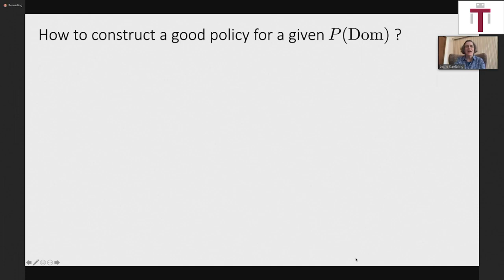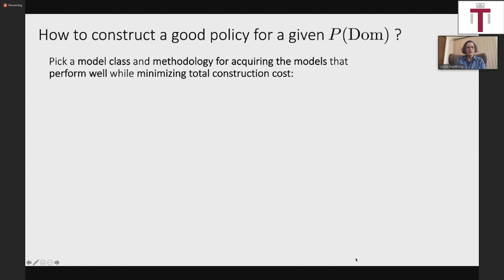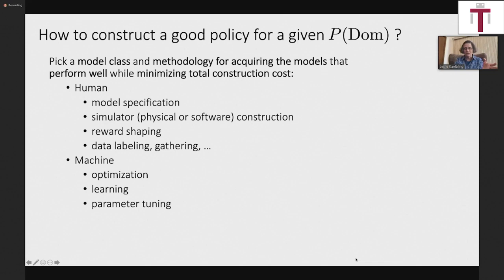Fundamentally, the way we tend to approach these problems is we pick some class of models and some way of acquiring the models, and we have to minimize engineering cost. Engineering cost includes human engineering cost — how hard it is to write the models down, make a simulator, do reward shaping — and work that machines have to do, like optimization, learning, and parameter tuning. We want to pick a model class where humans have useful insight, where the optimization part is not too hard, and where whatever learning we need to do will generalize well.